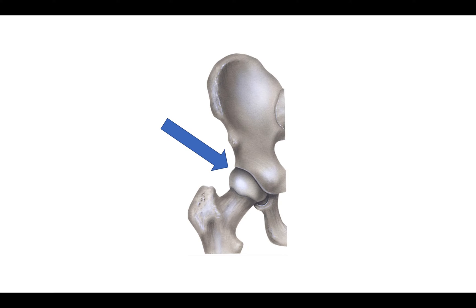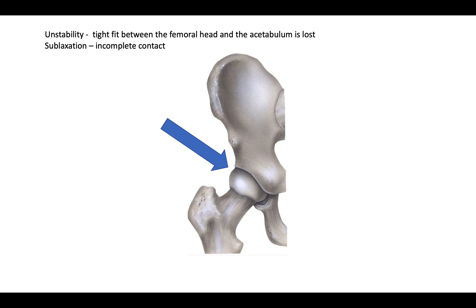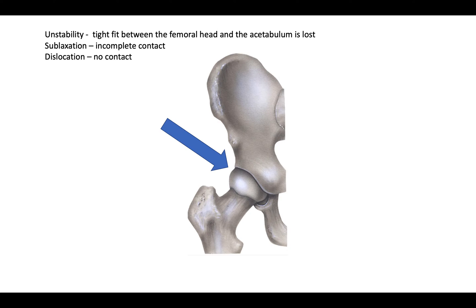This can lead to three main things: instability, subluxation, and dislocation. The hip is unstable when the tight fit between the femoral head and the acetabulum is lost, and the femoral head is then able to move within or outside the confines of the acetabulum. Subluxation refers to incomplete contact between the articular surfaces, and a dislocated hip has no contact between the femoral head and the acetabulum.